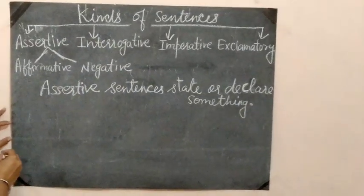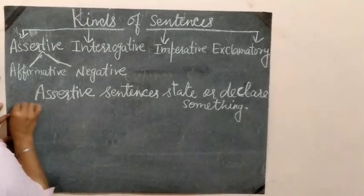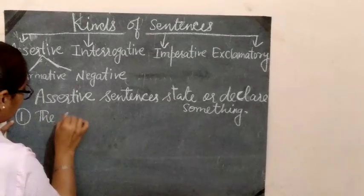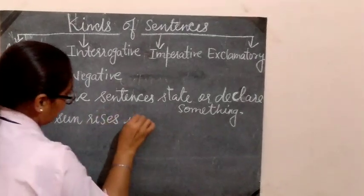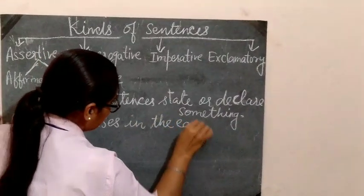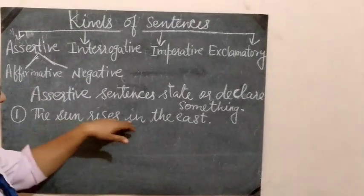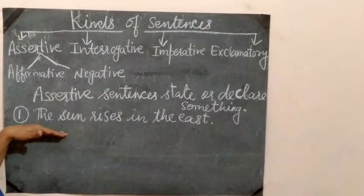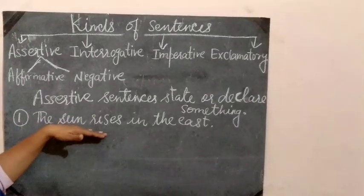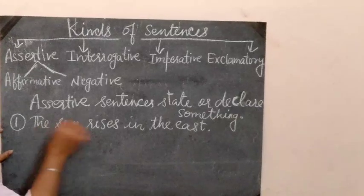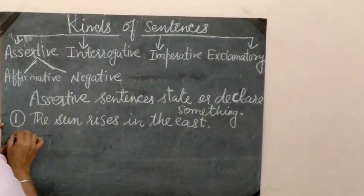I am going to explain by showing some examples. Number one: 'The sun rises in the east.' In this sentence, the sun rises in the east — this is a fact. So this sentence is giving a statement, and it is an assertive sentence.